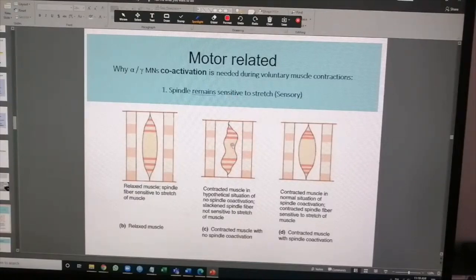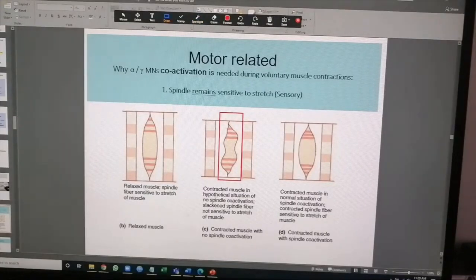So this is the extrafusal. You contract it without contracting the intrafusal fiber. Look at what happens. If you were to hypothetically contract the extrafusal only, this is the problem that you'll get. This is a bad problem to have, because now the muscle fiber has slackened and it's not sensitive to stretch. It has literally stopped working.